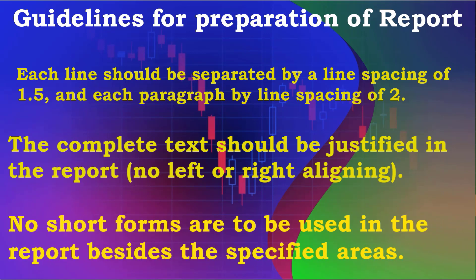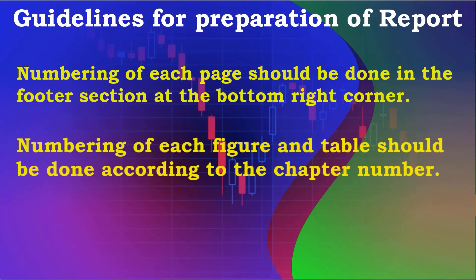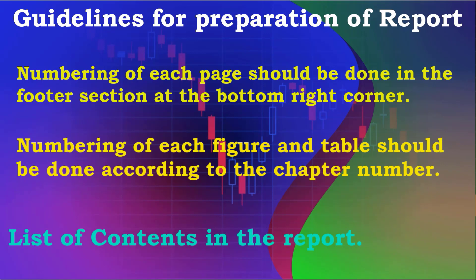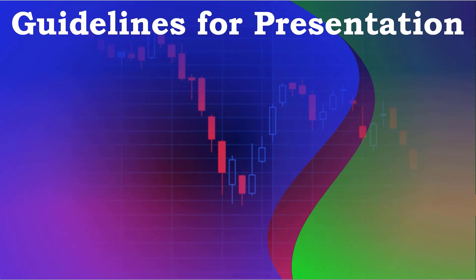Number 12: No short forms are to be used in the report besides the specified areas. Number 13: Numbering of each page should be done in the footer section at the bottom right corner. Number 14: Numbering of each figure and table should be done according to the chapter number. Number 15: List of contents in the report — first page: cover page and title page; after this: certificate; after this: acknowledgements; after this: abstract; then table of contents; after this: list of tables, if any; after this: list of figures, if any; then chapters; after this: appendix, if any; and at the end: references.